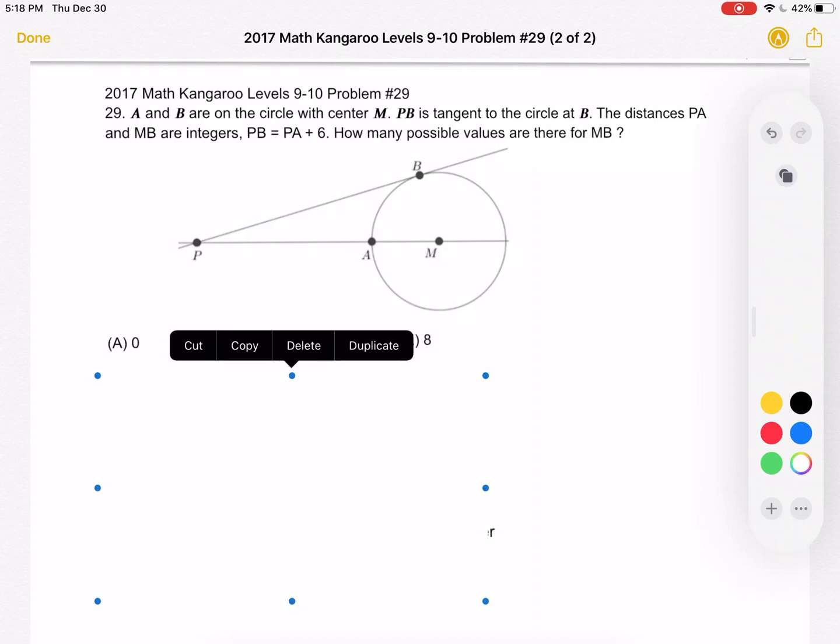So to start, we know that we're trying to find the number of possible values for MB, which we can see is equal to the radius of the circle centered at M.